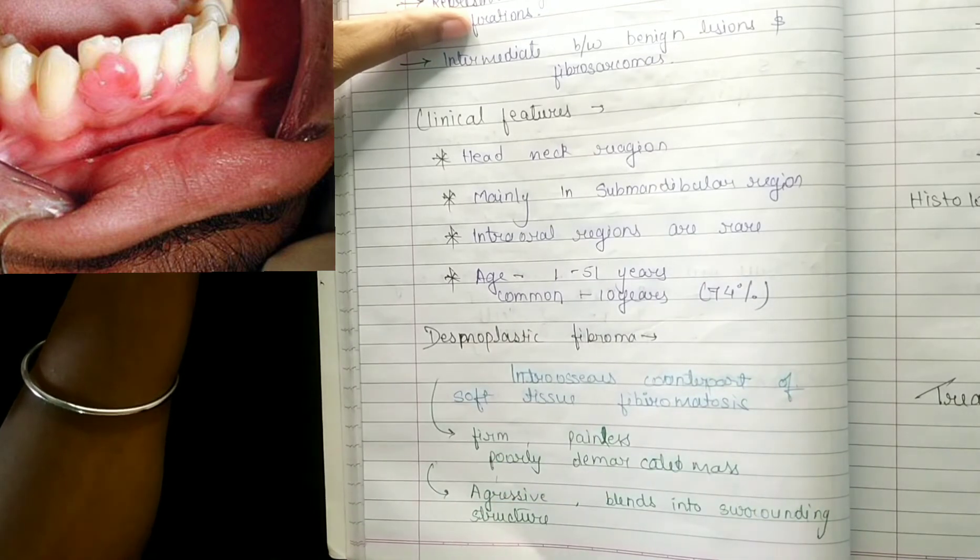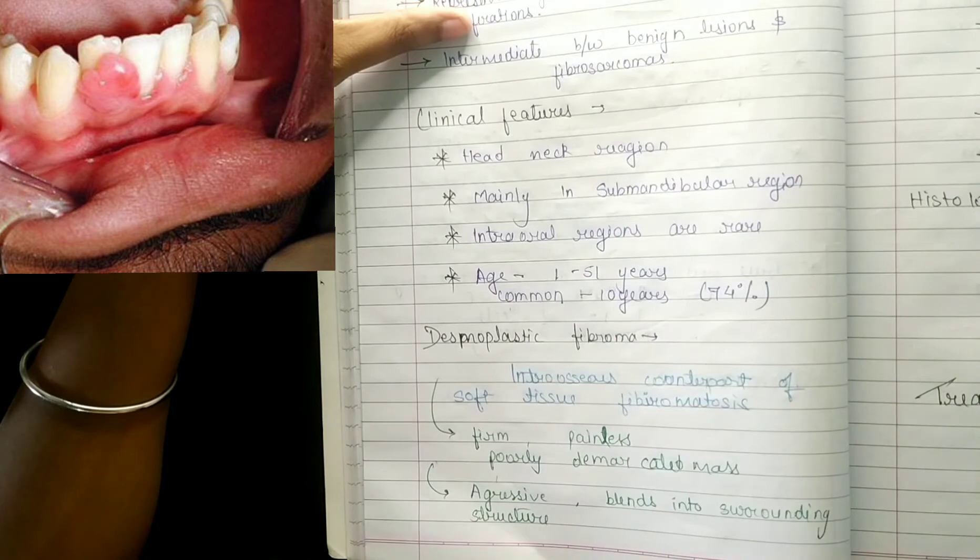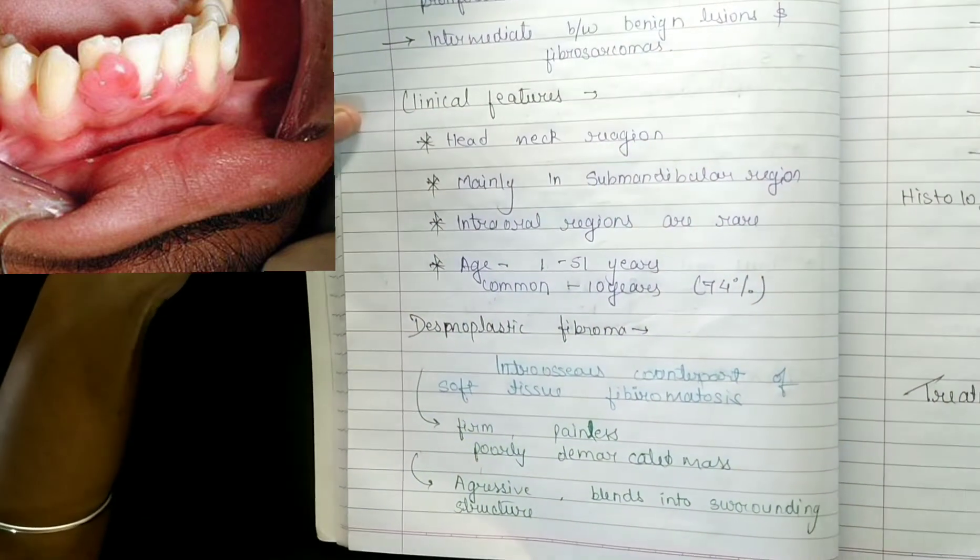But most commonly juvenile, most commonly 74%.